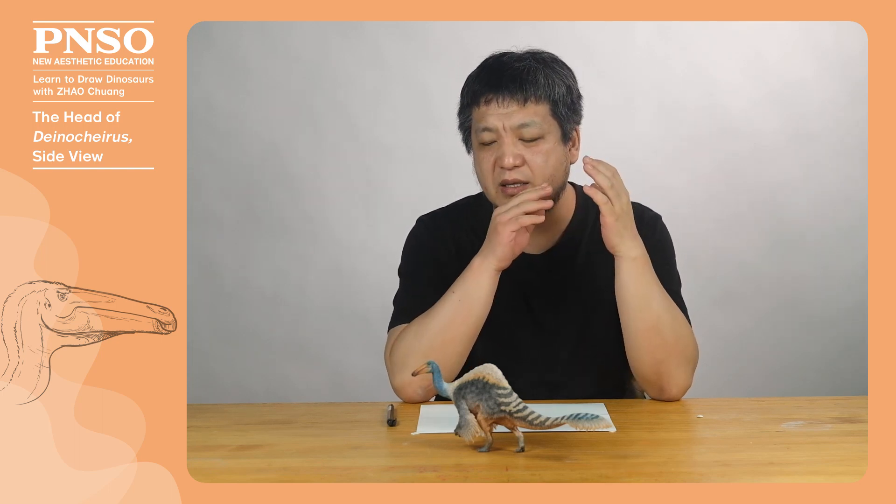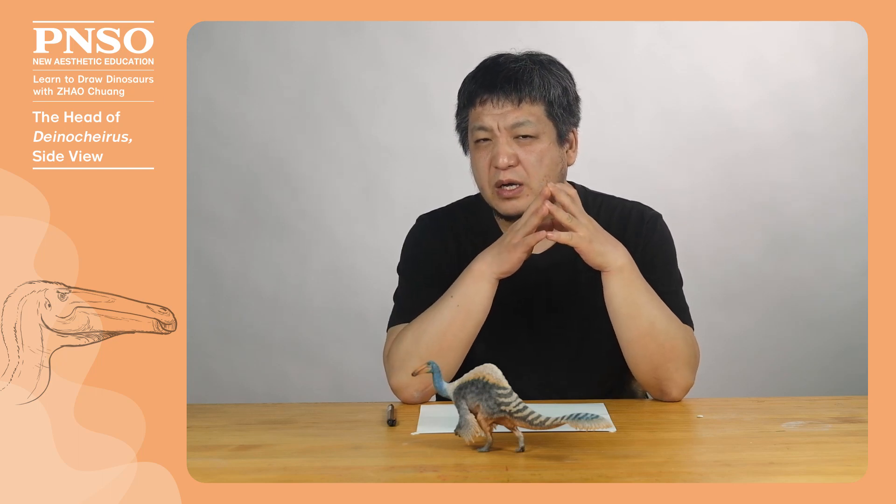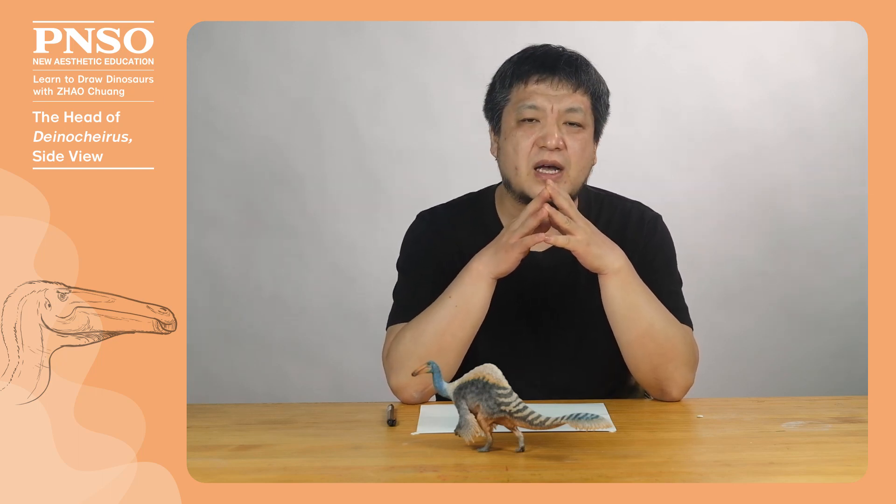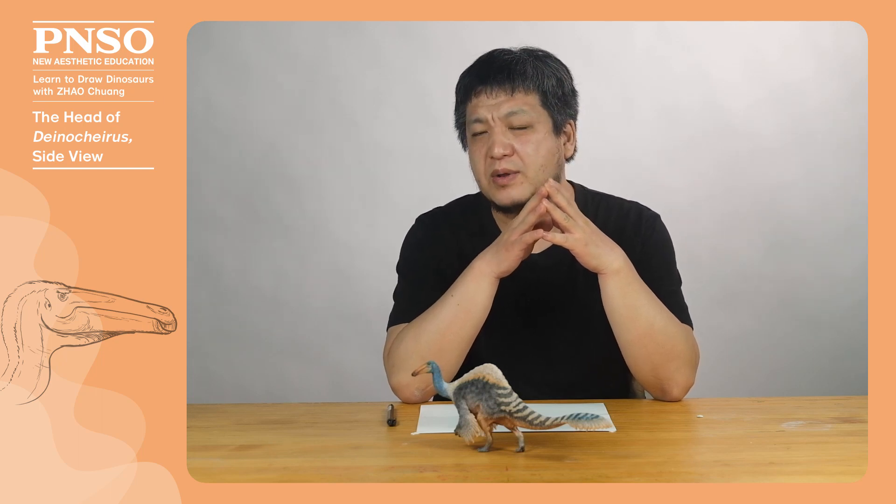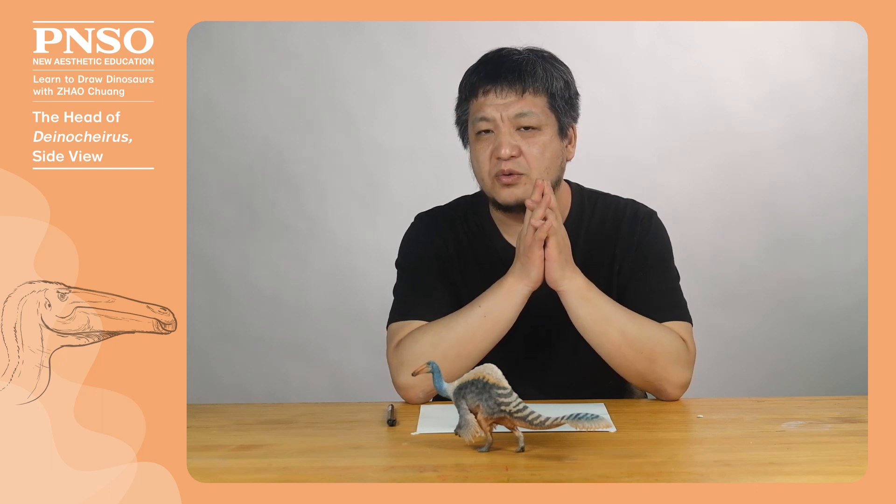Deinocheirus was a very mysterious dinosaur, and we didn't know the specific appearance of its head until recent years. The first time I heard about its appearance was around 2005 to 2006 from the late Mr. Liu Jun Chang.